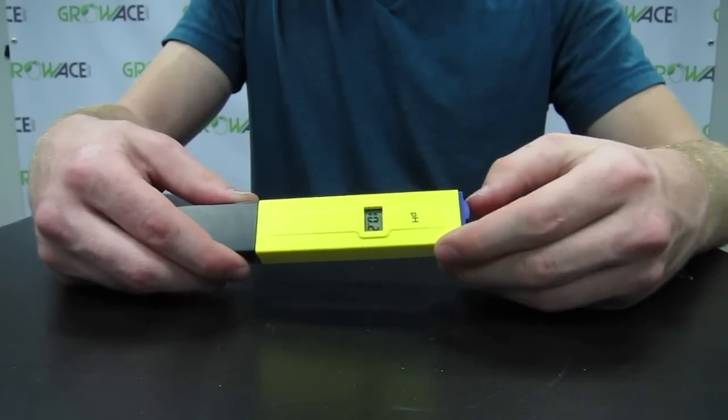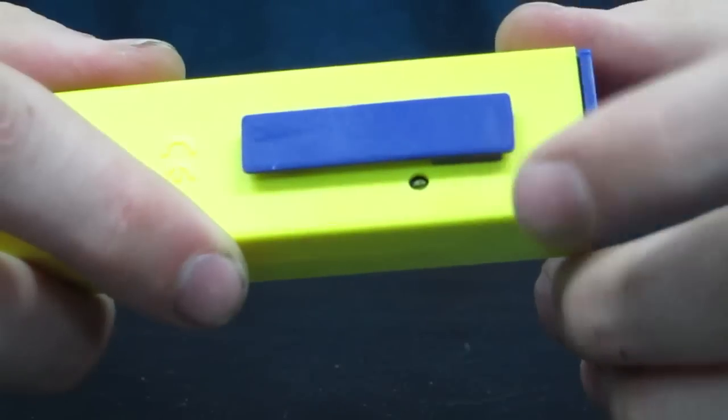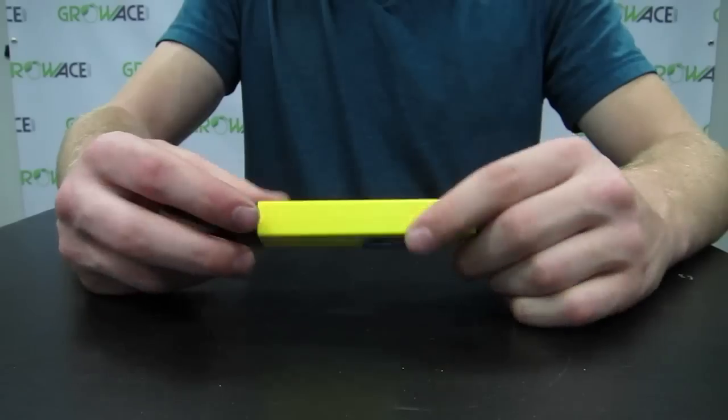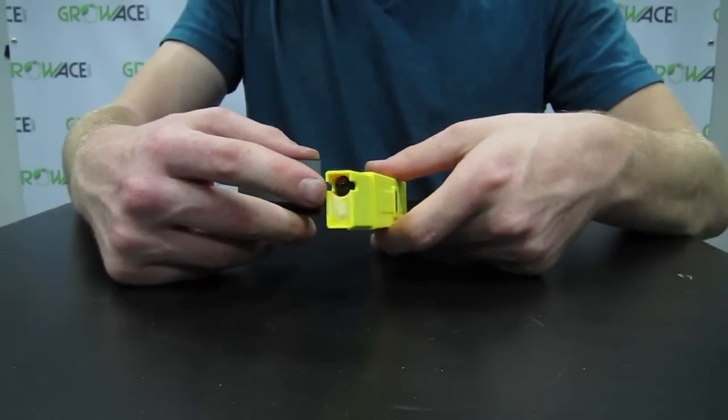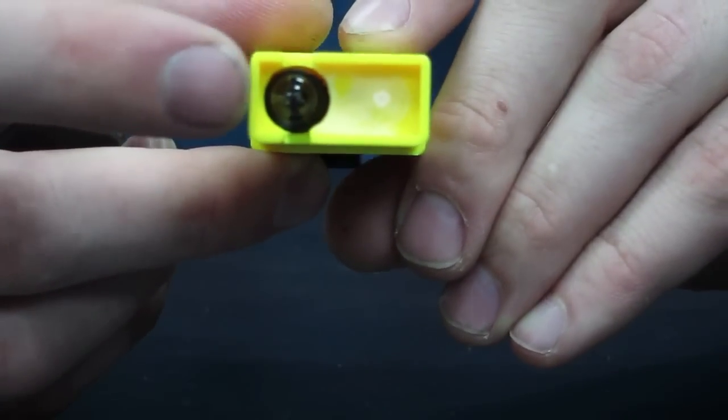Then you have your display. Flip it over and you'll see a calibration screw. Remove the cap, you'll see the electrode. It's important to keep the electrode clean and distilled. Keep it dry before recapping.